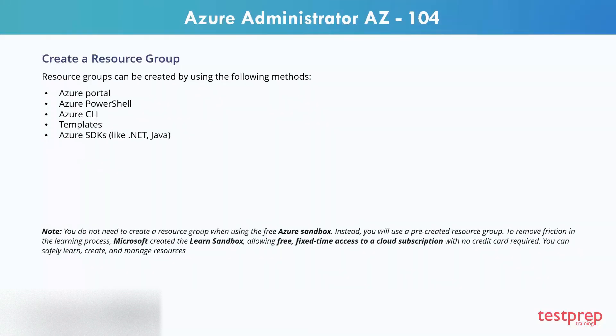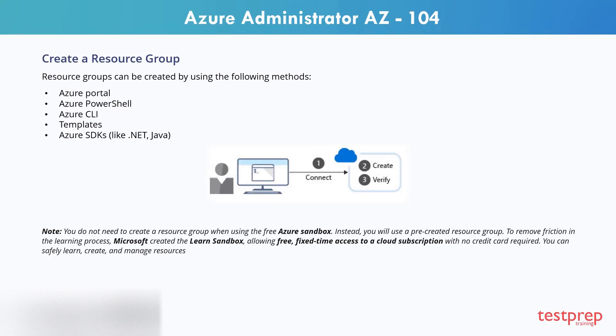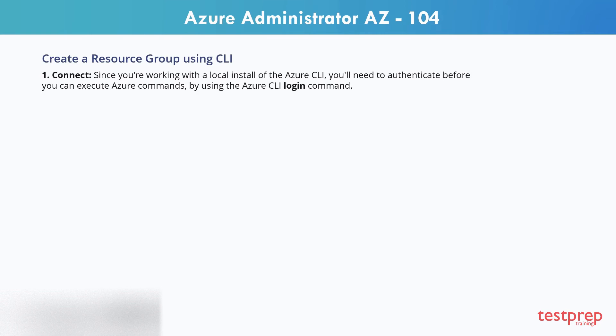Resource groups can be created by using the following methods. When creating a new Azure resource, there are typically three steps: connect to your Azure subscription, create the resource, and verify that creation was successful. To create a resource group using the CLI, since you're working with the local install of the Azure CLI, you'll need to authenticate before you can execute Azure commands, by using the Azure CLI login command.